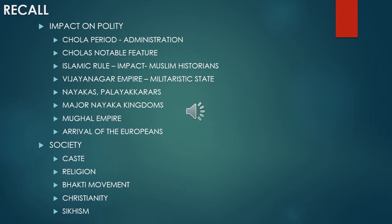Then we discussed society. In society, we first discussed caste — an important character of Indian culture. Basically in the Vedic period there were four types of caste. Later, because of the arrival of many foreigners, many sub-castes began to emerge. There were many mythological stories about our caste system. Then we discussed religion — the rise of the Bhakti movement, like the Saivite movement and Saiva Siddhanta in Tamil Nadu, and Vira Saiva in Karnataka.